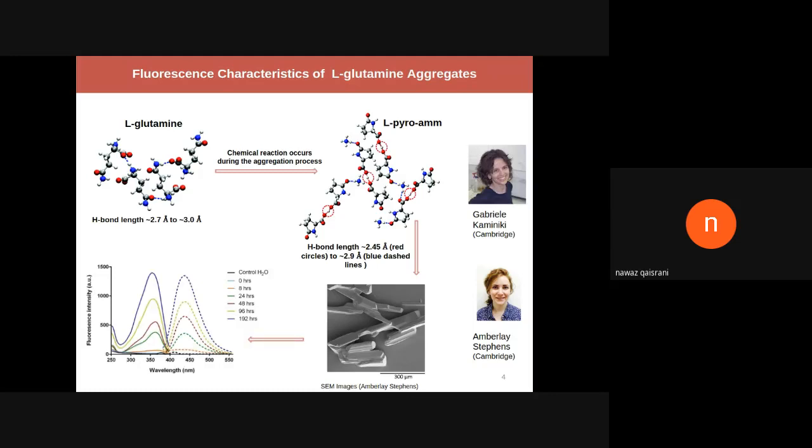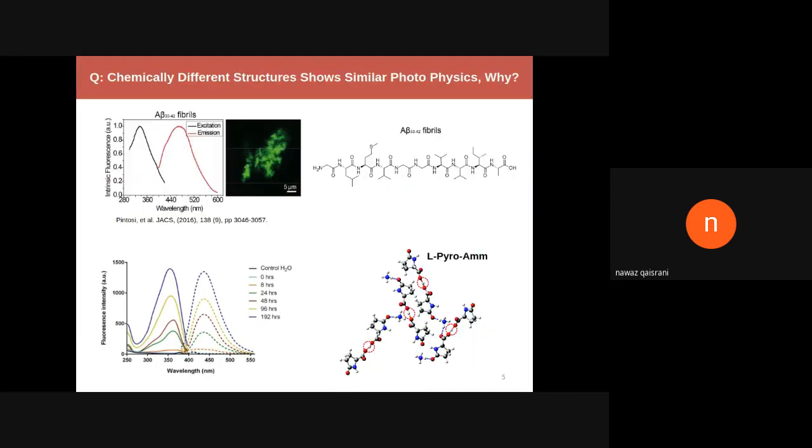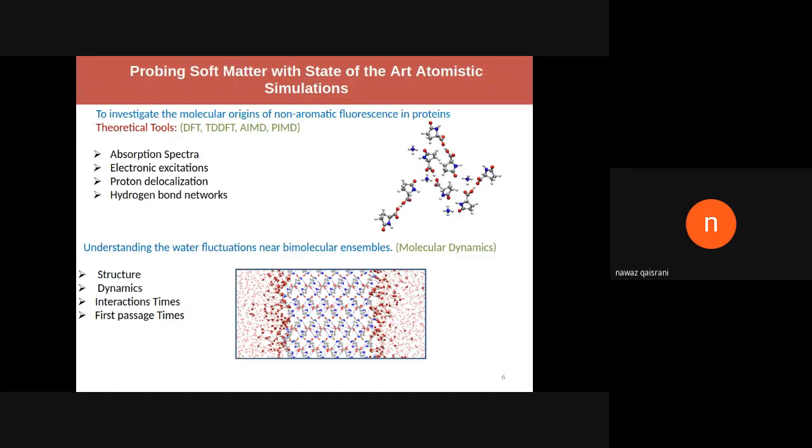This imposes a very interesting question: why do chemically different structures show similar photophysics?